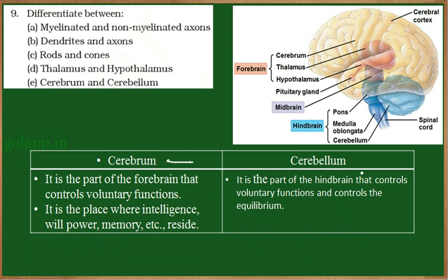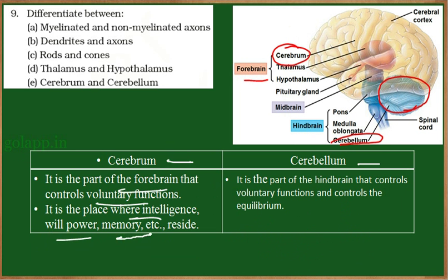The next comparison is cerebrum and cerebellum. The cerebrum is the biggest part of the forebrain, while the cerebellum — also called the little brain — belongs to the hindbrain. The cerebrum controls voluntary functions and is the place where intelligence, willpower, and memory centers reside. It is the center for intelligence, memory, and reasoning, and all these higher sensory functions are present in the cerebrum.